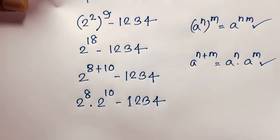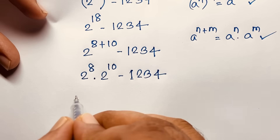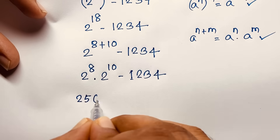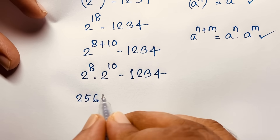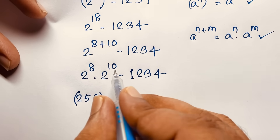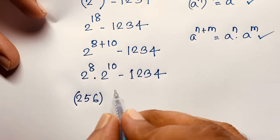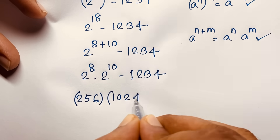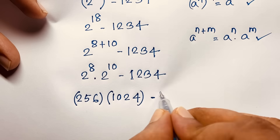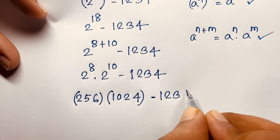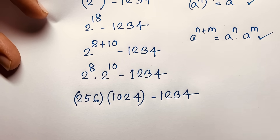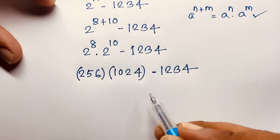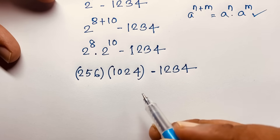Then you can easily see here: 2 to the power 8 will be 256, and 2 to the power 10 will be 1024. So the expression is 256 times 1024, minus 1234. Now how to simplify this expression?